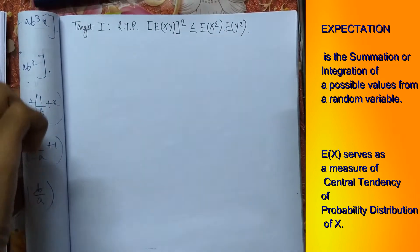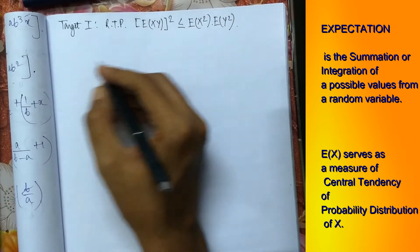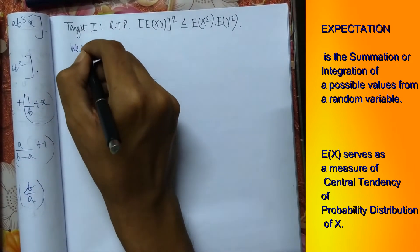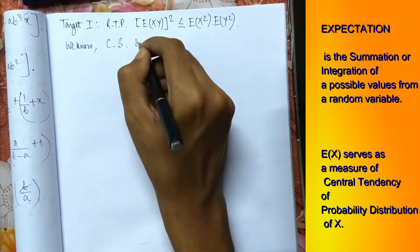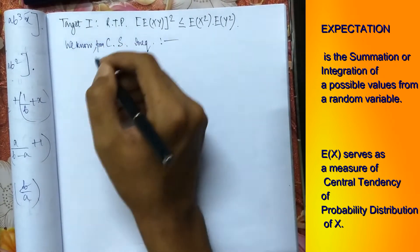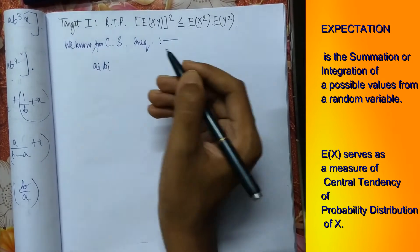As earlier already said we have to remember the Cauchy-Schwarz inequality in here. So we apply here. We know the Cauchy-Schwarz inequality. So we know from the Cauchy-Schwarz inequality that